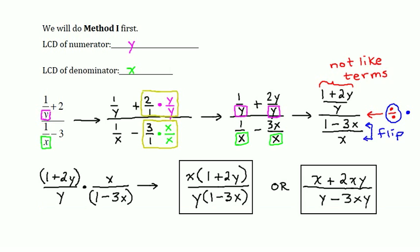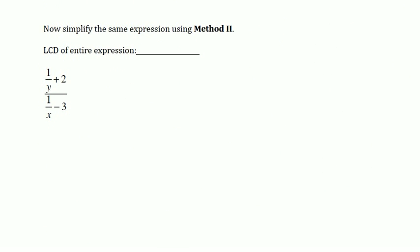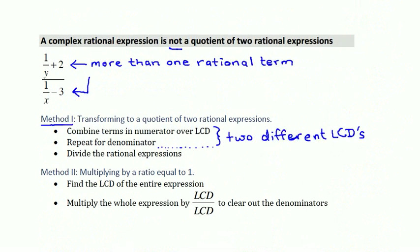We will now look at this same expression using method 2, and we should arrive at the same answer. In method 2, we start by finding the LCD of the entire expression. For method 2 we cannot have two separate LCDs — this is a very important distinction. In the numerator I have Y as my only denominator, and in the denominator I have X as my only denominator. Considering all of this together, the LCD of the entire expression is XY. Method 2 then involves multiplying the whole expression by XY over XY, which will clear the denominators on the individual levels.